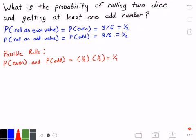We could also roll an odd number or odd value and we could roll an even value. So that would be the probability of rolling an odd value and the probability of rolling an even value. And so this gives us 1 half times 1 half, which also equals 1 fourth.